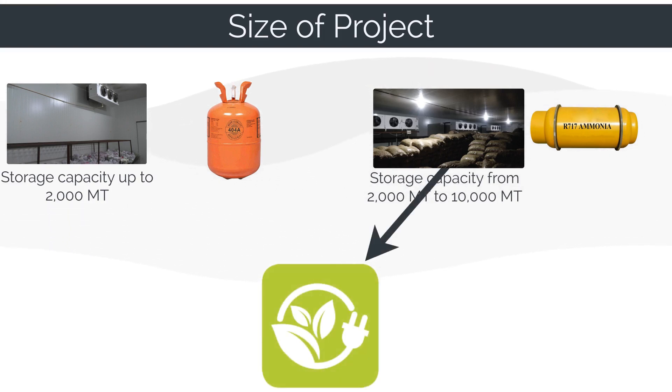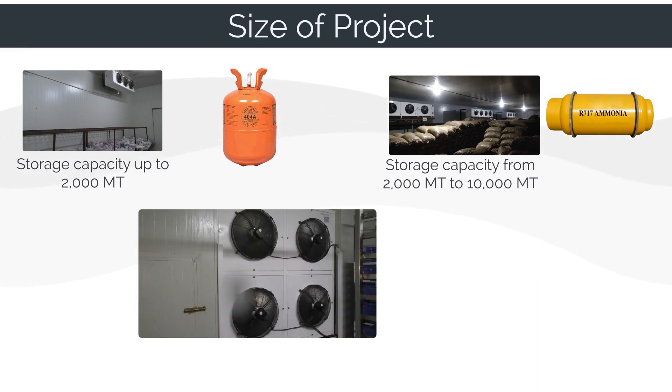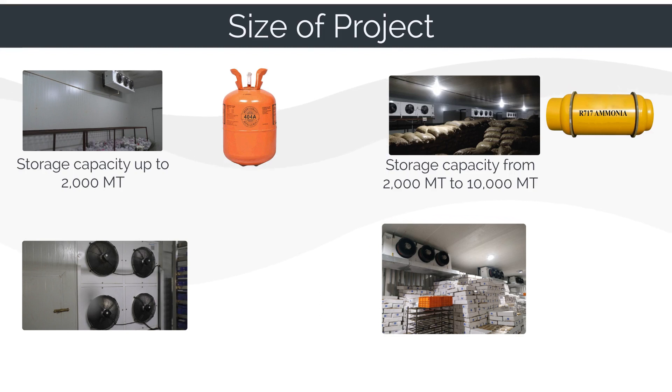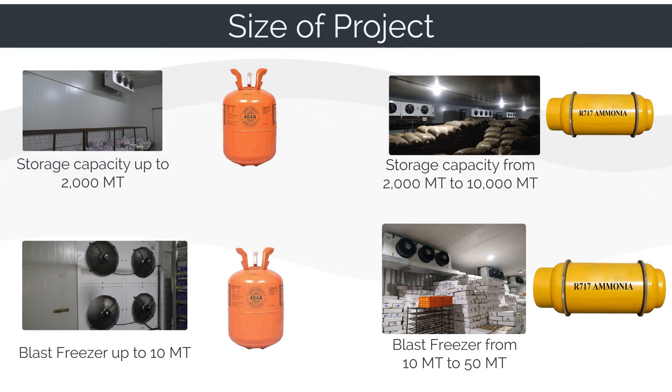For blast freezing of up to 10 ton of meat, fish, seafood, we suggest fully automatic Freon system. For blast freezing of more than 10 ton to 50 ton of meat and fish in a given plant, we suggest ammonia refrigeration systems.